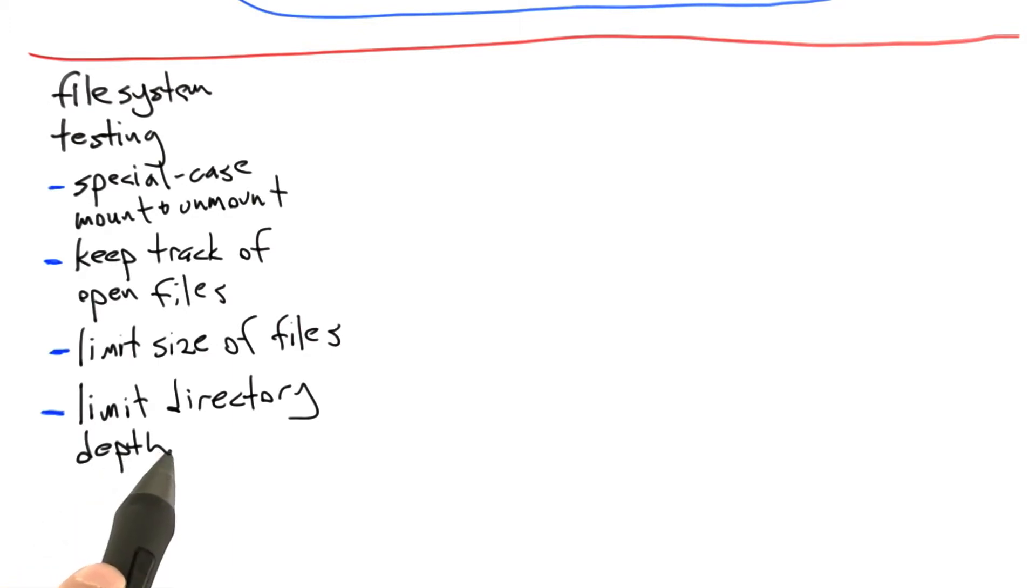On the other hand, we may want to do exactly that—test extremely deep directory hierarchies or extremely large files. But it might be the case that these are special cases we want to test separately from the main body of our fuzzer.